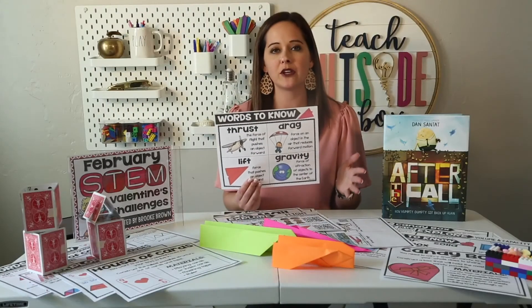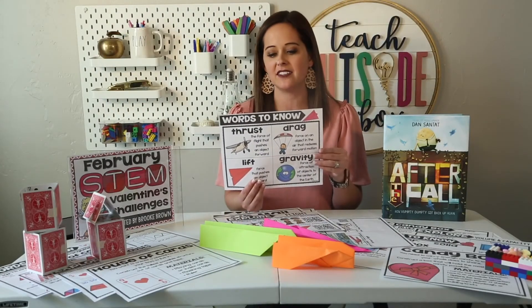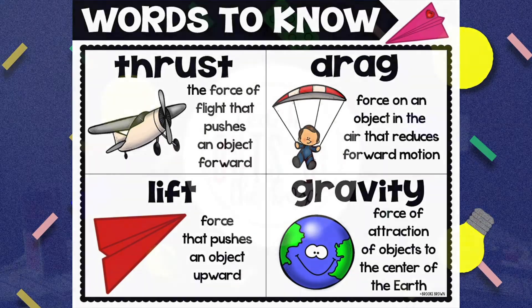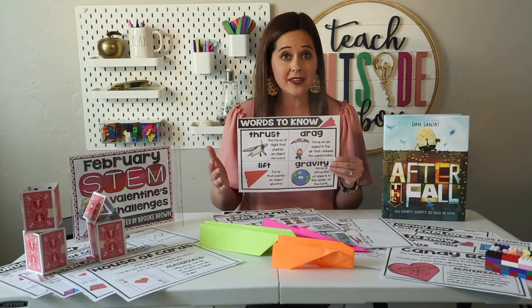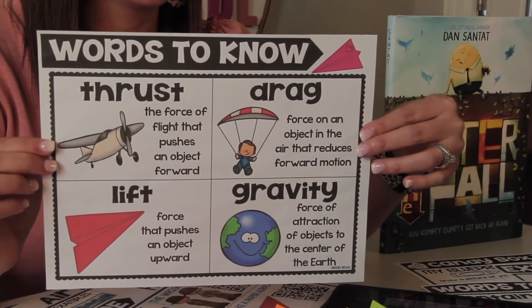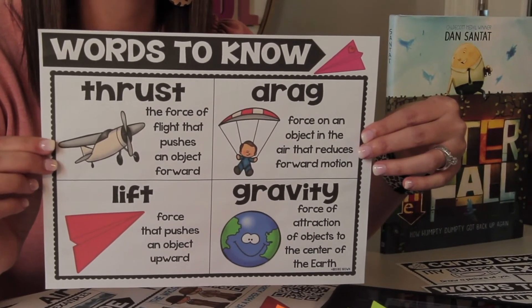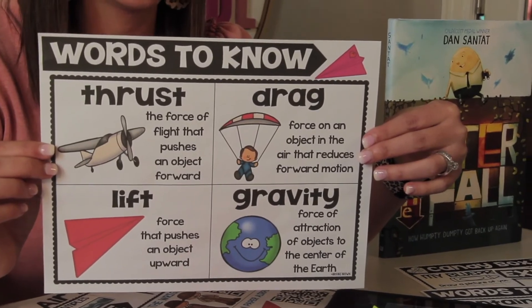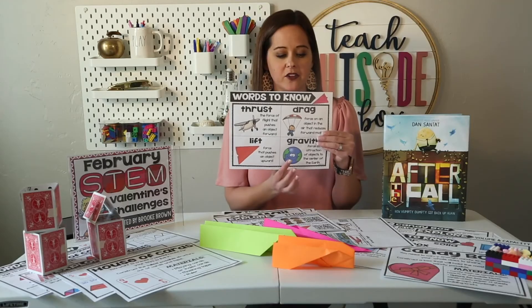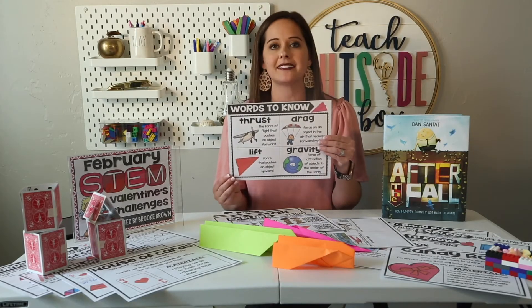The key vocabulary you want students to walk away with are the four forces of flight: thrust, drag, lift, and gravity. When I line my students up at the door, I have them recap what we learned, and these are the four words we emphasize. Thrust is your arm when throwing the paper airplane; drag is the force that slowly pulls it down and varies with airplane design; lift is the force that keeps it up off the ground; and gravity is the force that pulls it back down to earth.